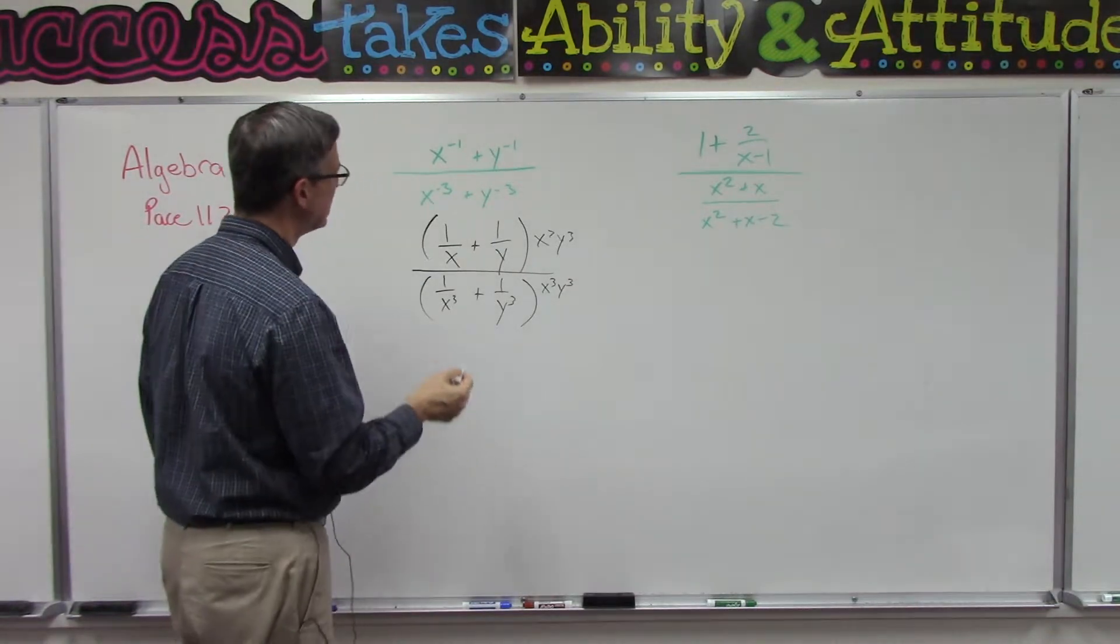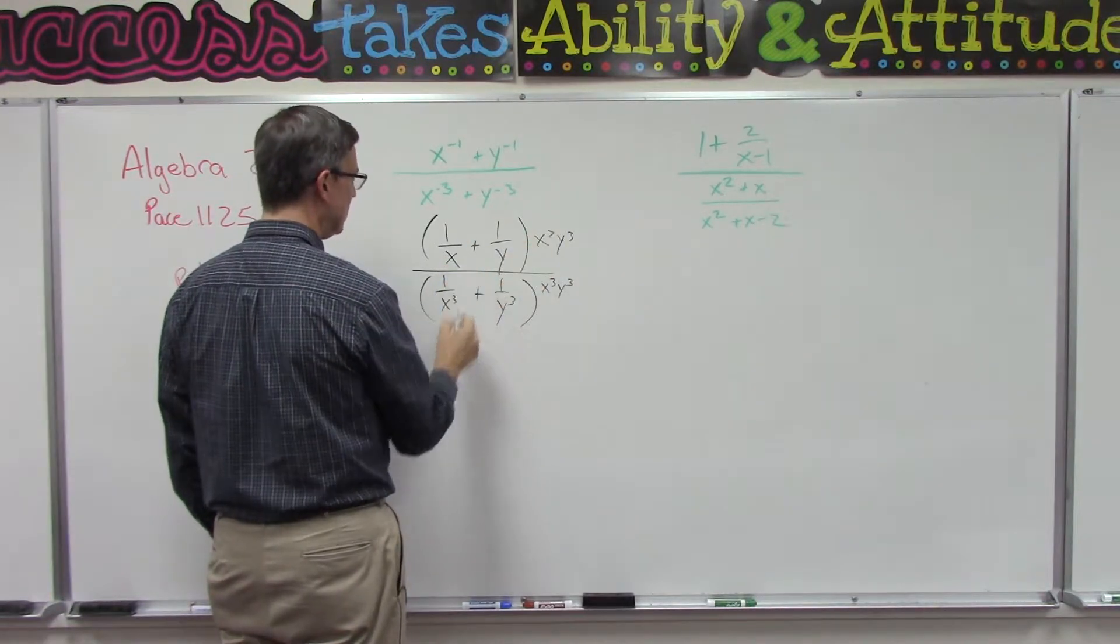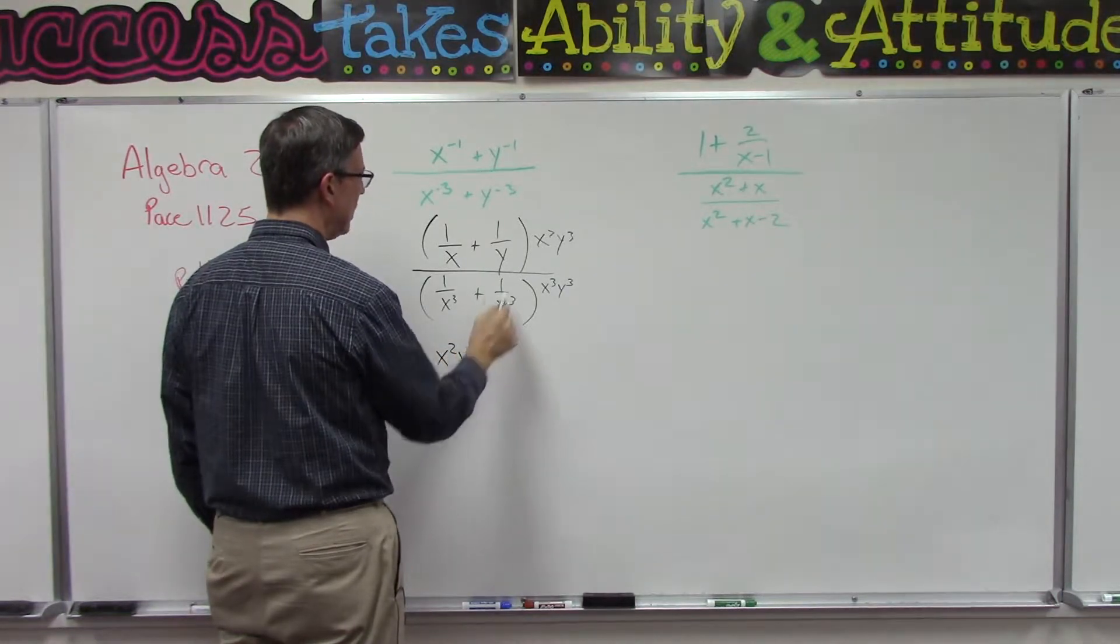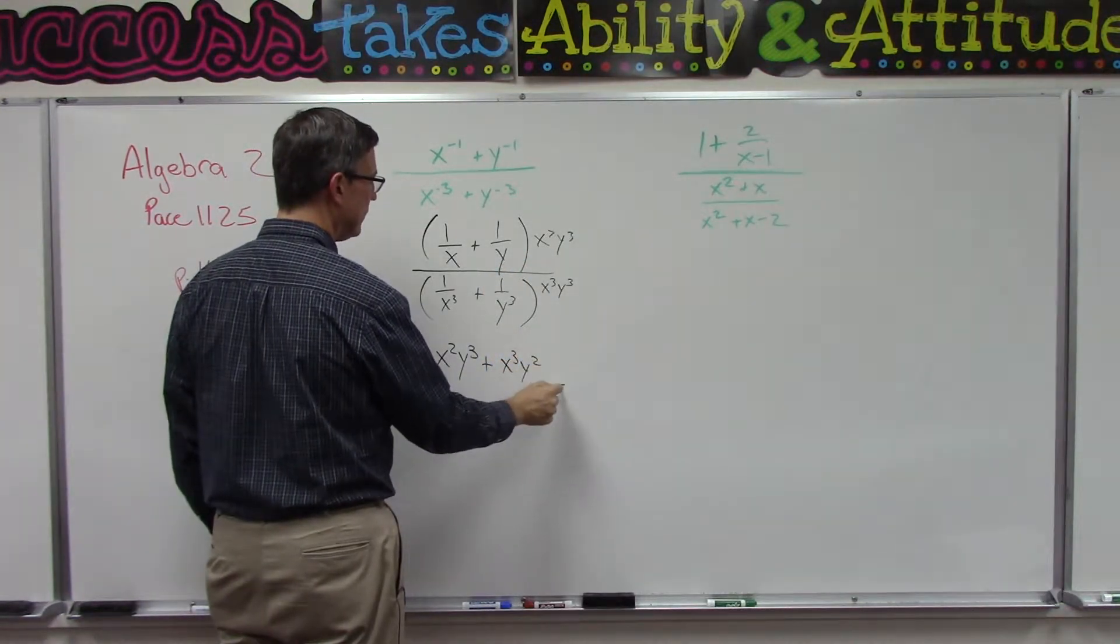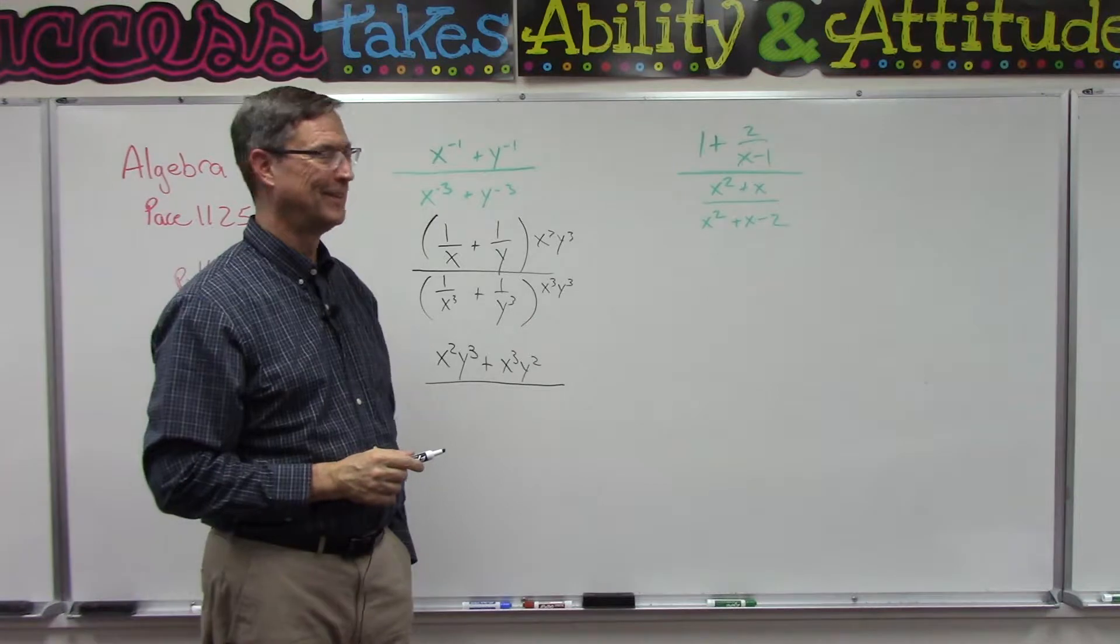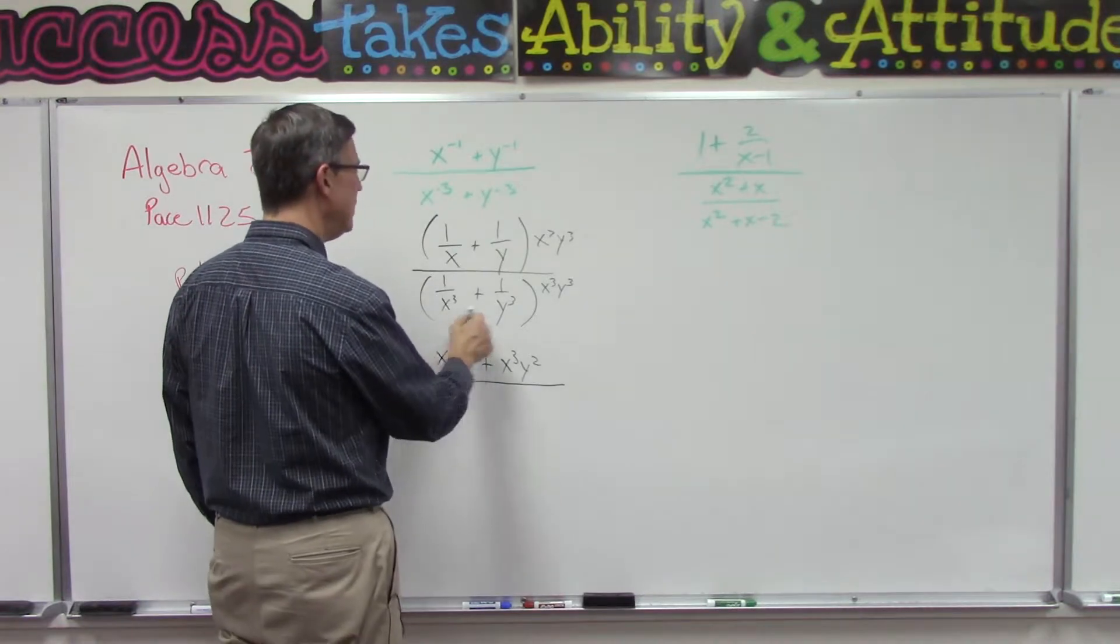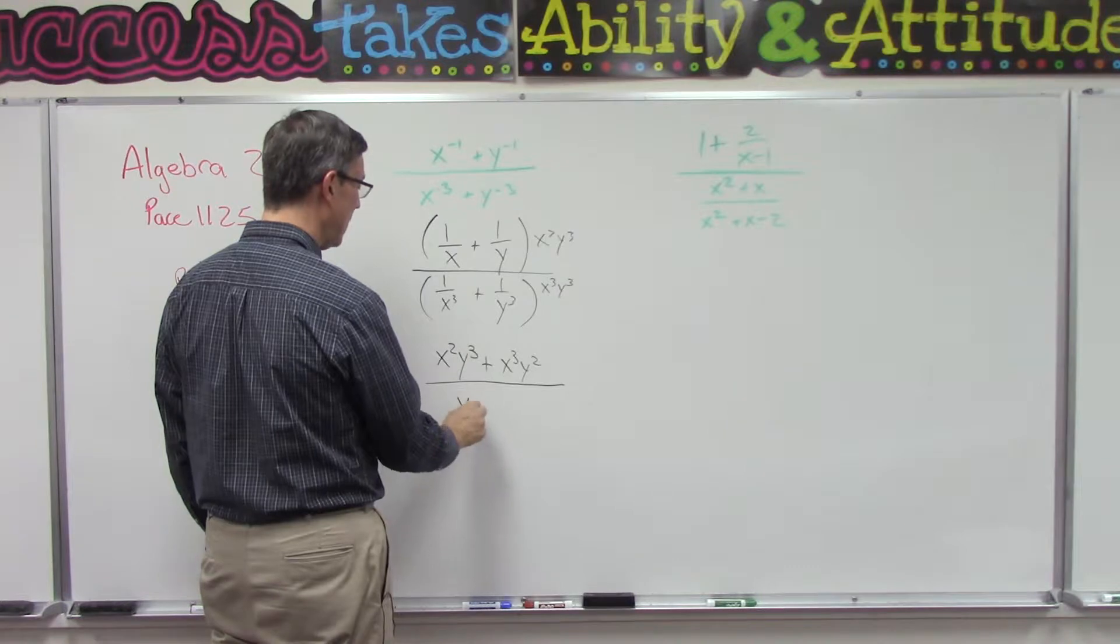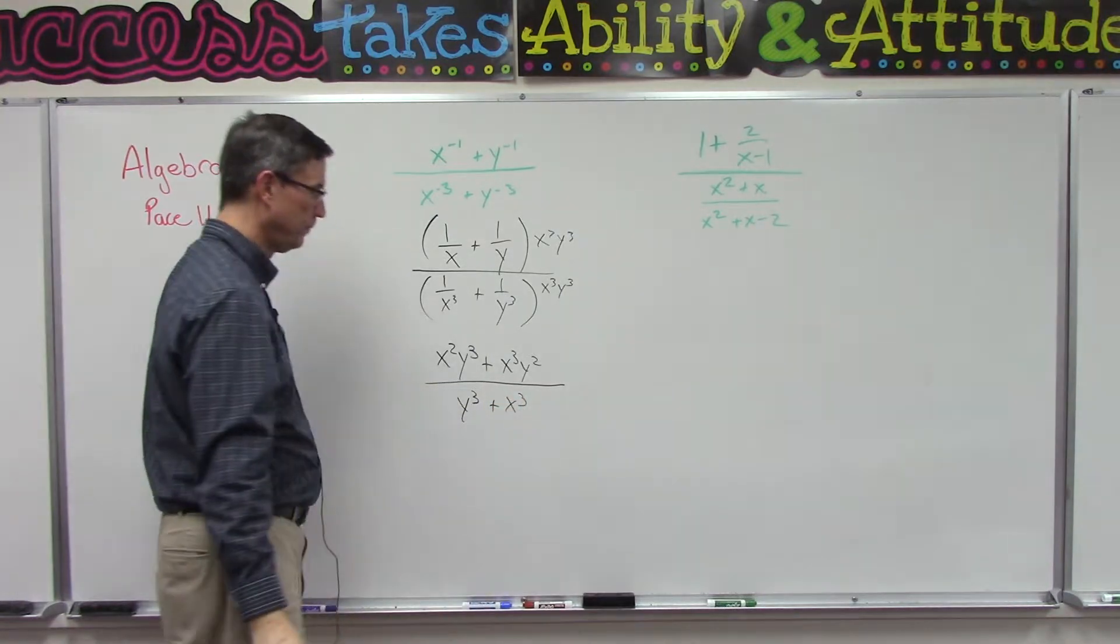Let's see what happens when we multiply this times just this first term. One of these X's cancels out, so I end up with X squared Y to the third plus, take it times this, one of the Y's cancels out, X to the third Y squared. And I can hear you saying Mr. Anger, this does not look like it's getting simpler. Well here we go, follow with me now. Here what happens, the X to the third cancels the X to the third and I have Y to the third, plus now the Y to the third cancels out and I have X to the third.